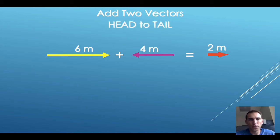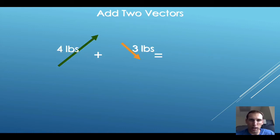Drawing them head to tail, we start with a 6-meter vector to the right, then we place this 4-meter vector beginning right here, and the resultant goes from beginning to end, 2 meters to the right. When we have vectors in line, it's pretty easy to see whether we should be adding or subtracting those magnitudes. But things get a bit more complicated when the two vectors are not pointed along the same axis.